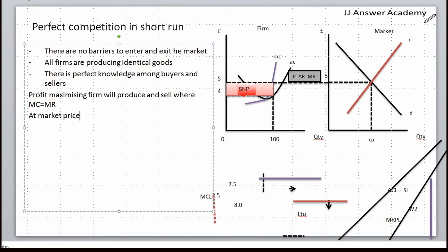At market price of five pounds, the firm is making a super normal profit of five minus four times 100 equals 100 pounds. Now because this firm is making this super normal profit, the red triangle, will other firms enter the market in pursuit of super normal profits?